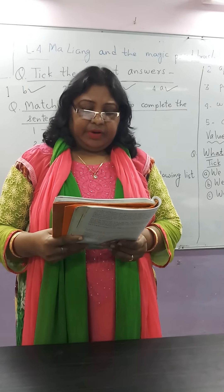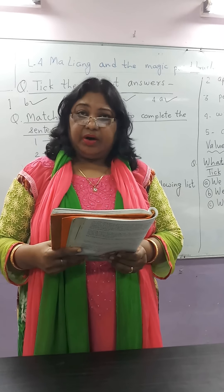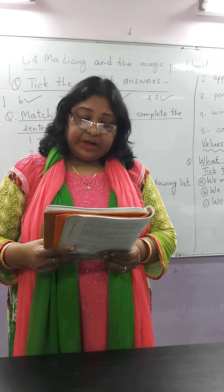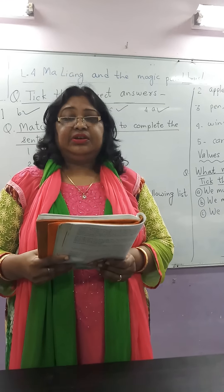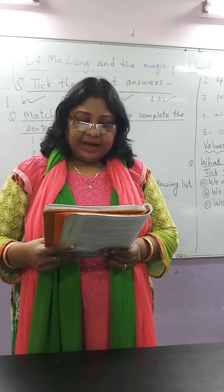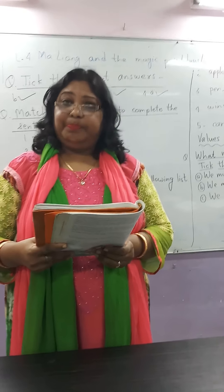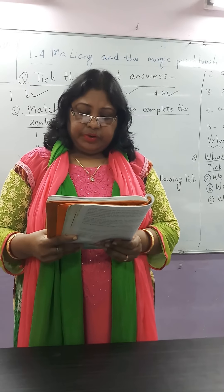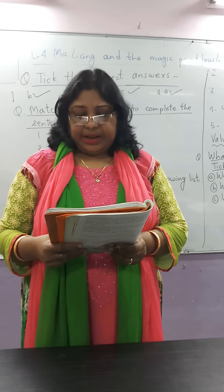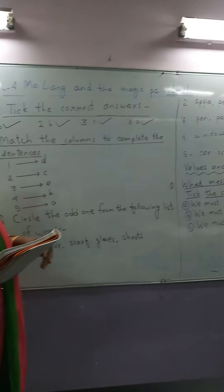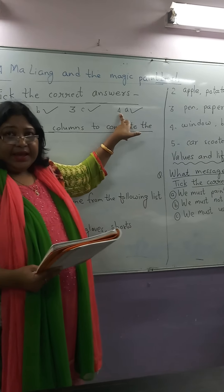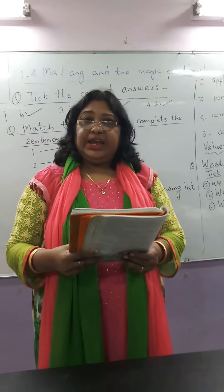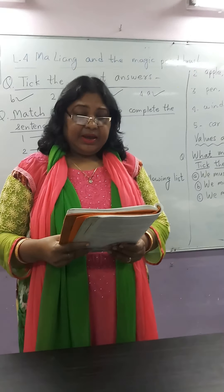Number 4: Maliyang was put into prison because — Option A: the emperor wanted to take his magic paintbrush. Option B: Maliyang was not helping the poor people. Option C: Maliyang did not want to help the emperor. And the answer is option A — the emperor wanted to take his magic paintbrush.